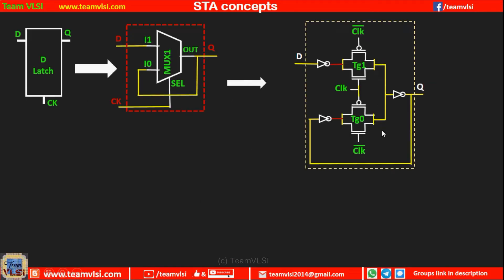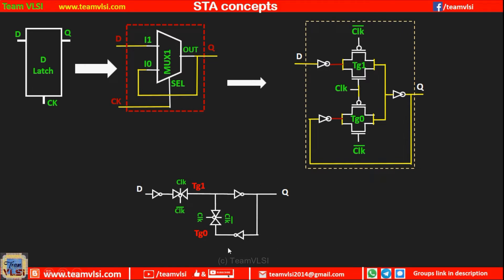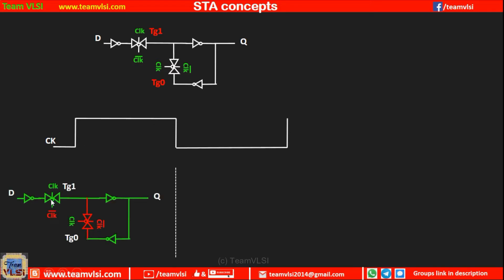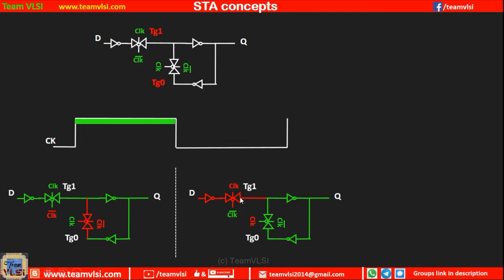The transmission gate can be realized using transistors in this arrangement, and its symbolic representation looks like this. When our clock signal is high, transmission gate 1 will be on and transmission gate 0 will be off. The previous value at Q will be latched and there is no connection from D — we call this stage opaque.